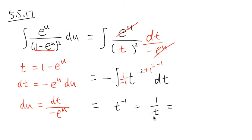But originally, the integral was in terms of u. And the t is equal to 1 minus e to the u. So I'm going to write this as 1 over t, which is 1 minus e to the u. Oops, this should be a u right here. And then plus c at the end. This is my u again. That's it.